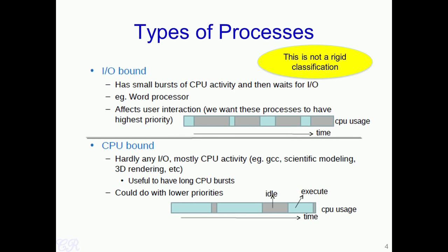This classification between IO-bound and CPU-bound is not rigid — a process could be IO-bound at one time and later behave like a CPU-bound process. For example, Microsoft Excel acts as an IO-bound process when entering data into cells, with small CPU bursts and large IO cycles. However, when computing statistics on the entered data, Excel behaves like a CPU-bound process with a large portion of CPU activity.